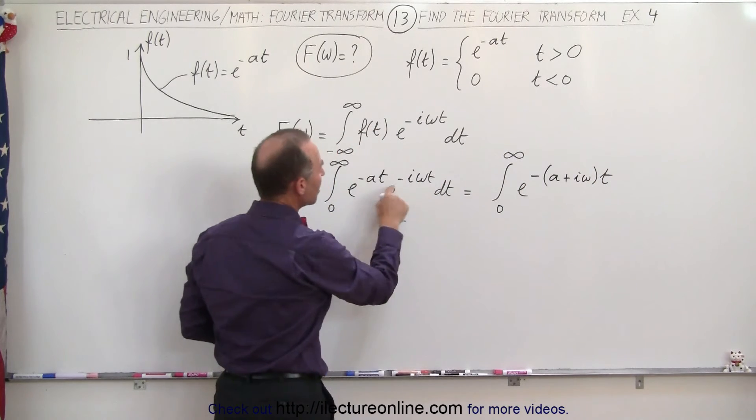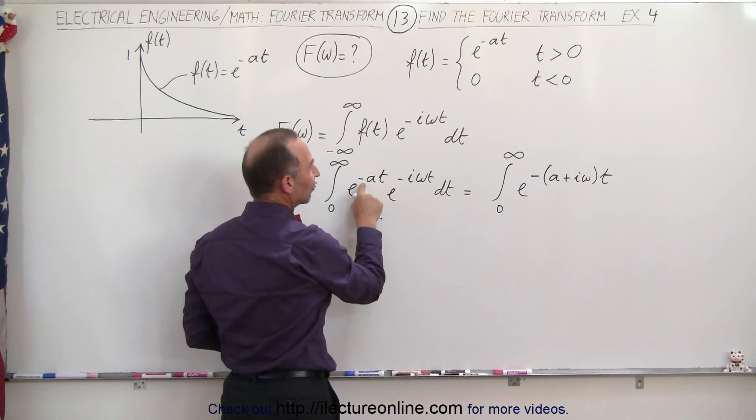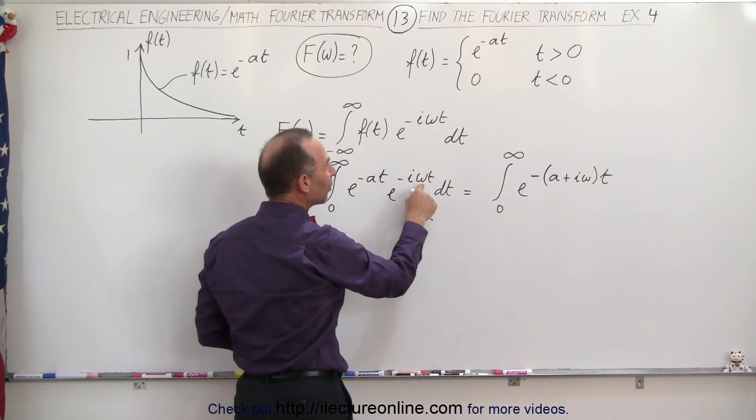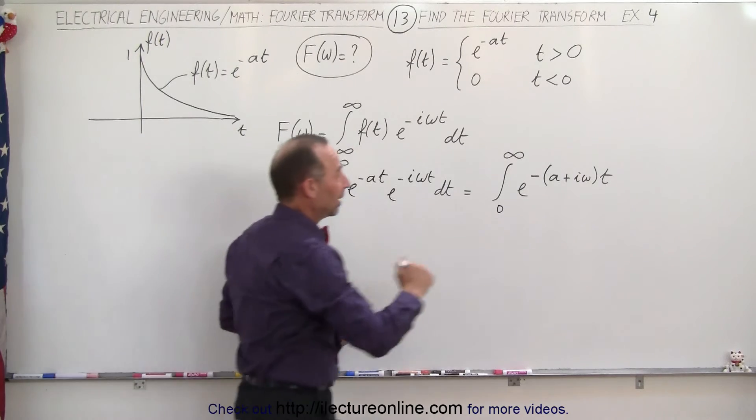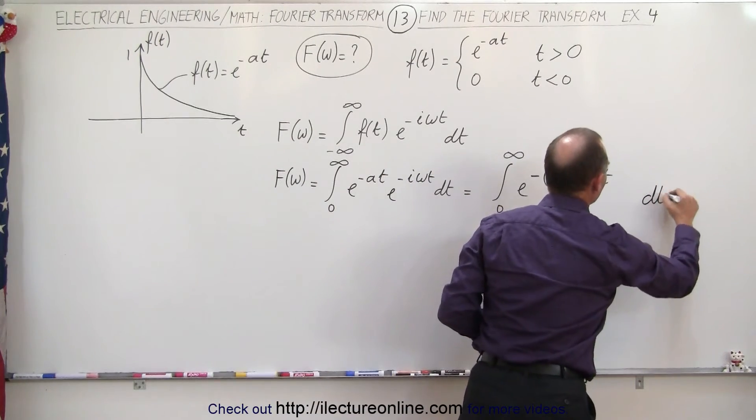so that would be negative times a plus i omega times t. So we factor out a t, we factor out a negative sign, so we can write as negative a plus i omega times t. Oh, I don't have a dt, better put a dt there.